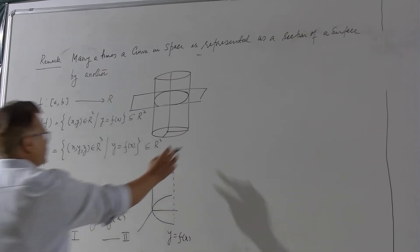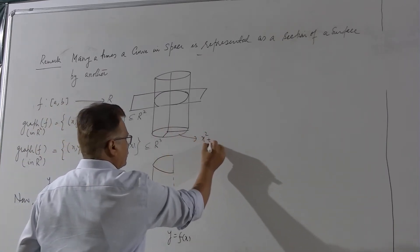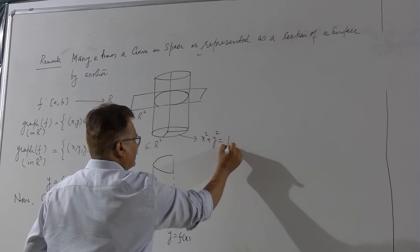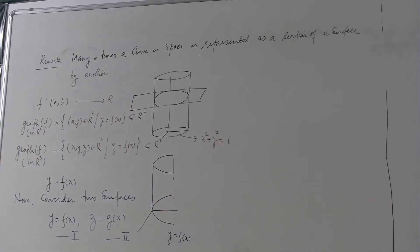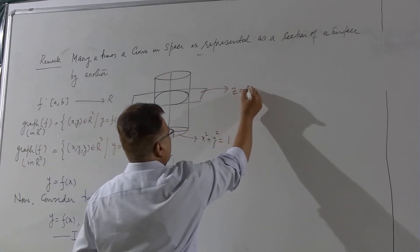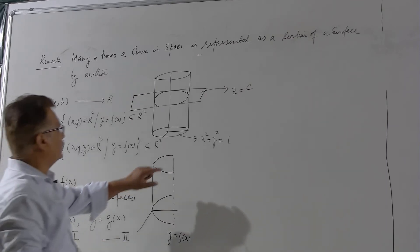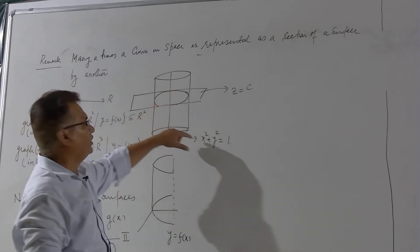What I do I consider both the equations simultaneously. So it is like this: I am considering this circle say x² + y² = 1 or y = ±√(1-x²) and the other one I take another surface z equal to something c, a constant.